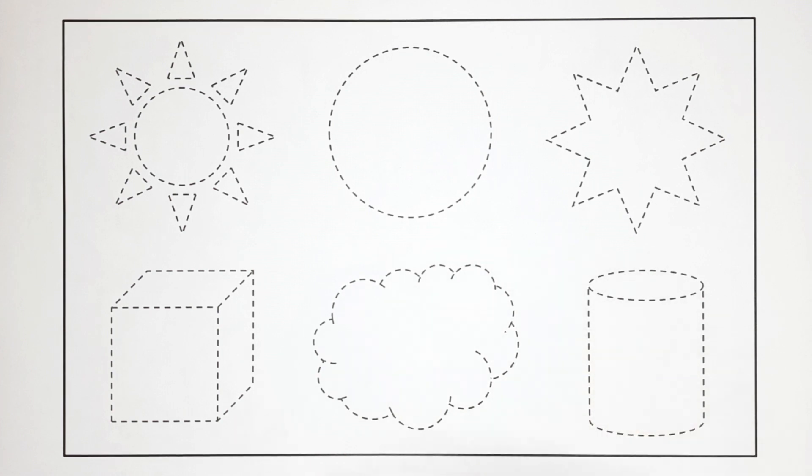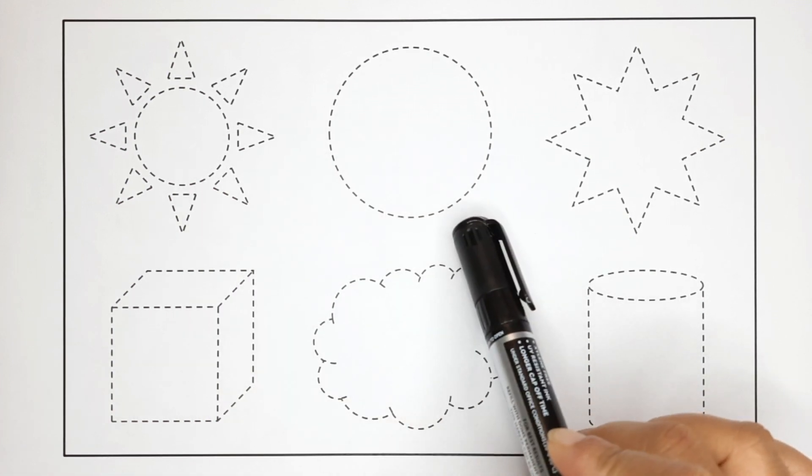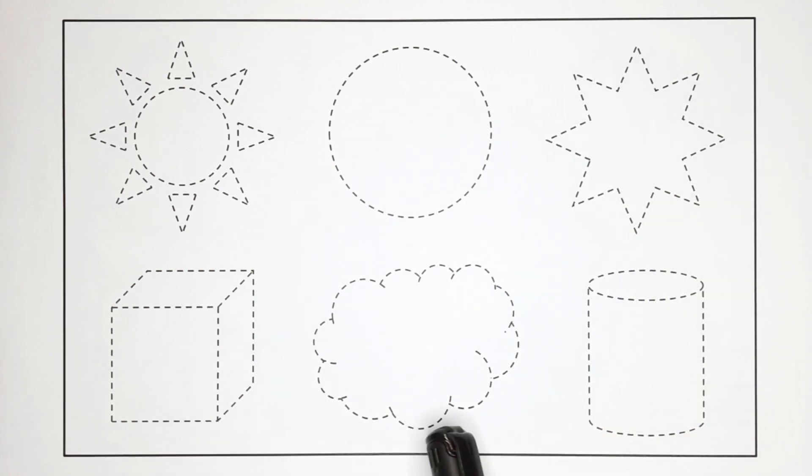Let's learn shape's name. Sun, Circle, 8 point star, Cube, Cloud, Cylinder.